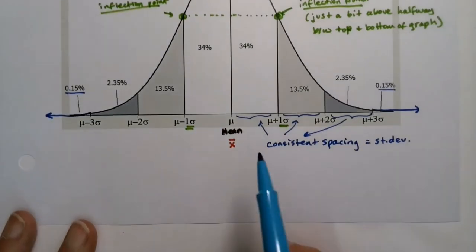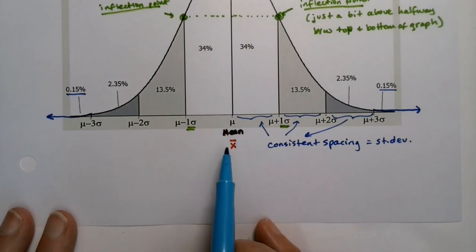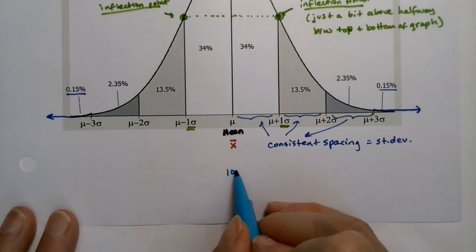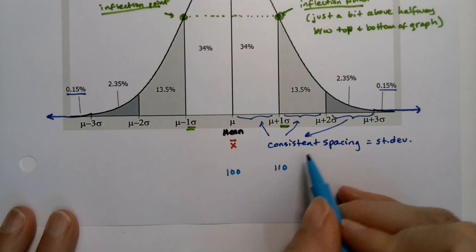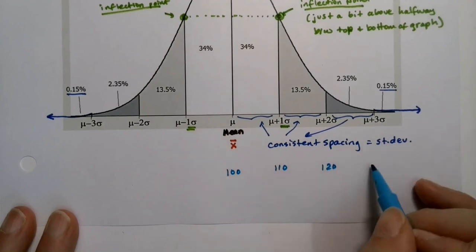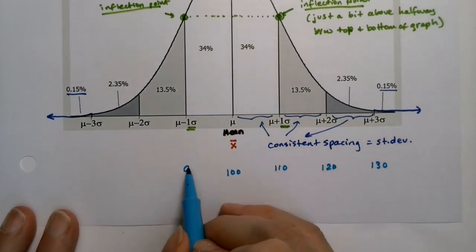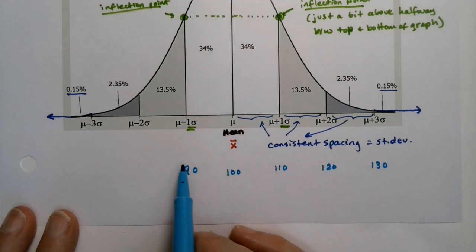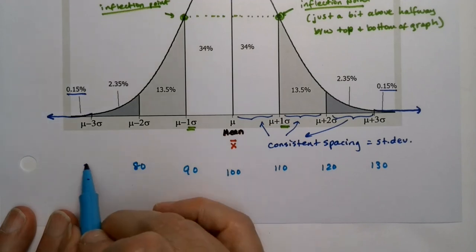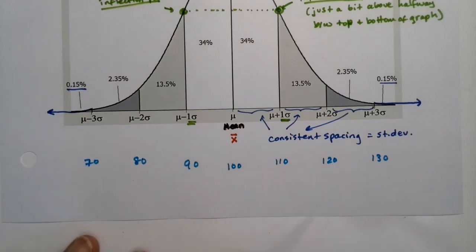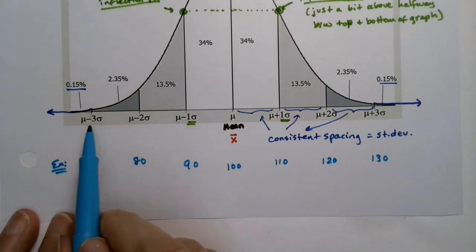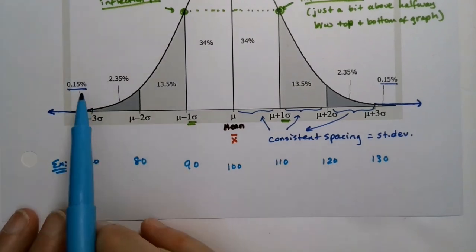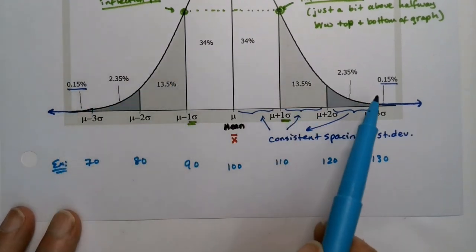So for example, if my mean is 100 and my standard deviation is 10, I would say 100, 110, 120, 130, right? And then this would be 90 because you're going to subtract 10, 80, 70, right? So that would be one example. I would label all those vertical lines, but the percentages would be the same every time.